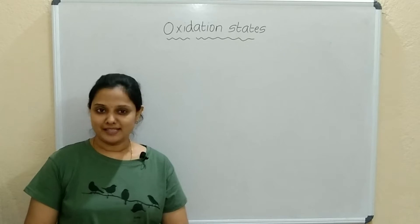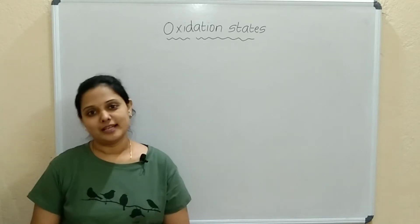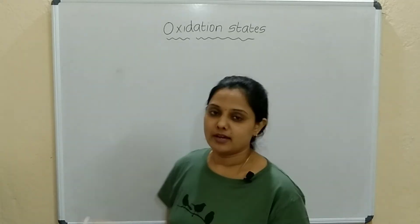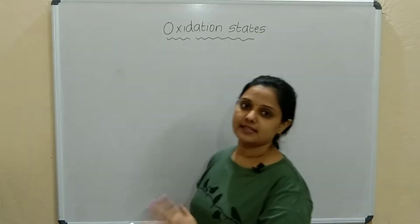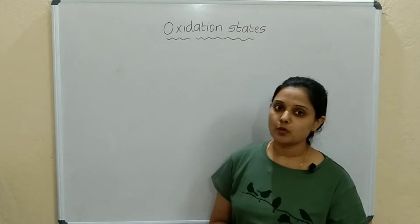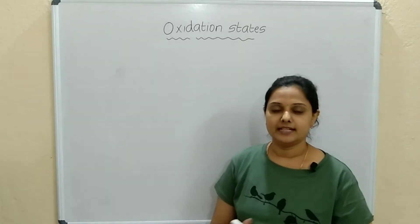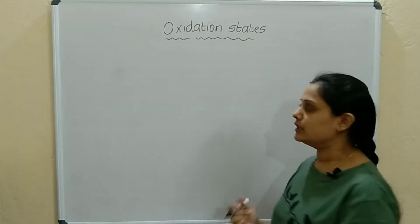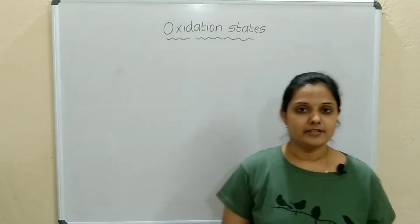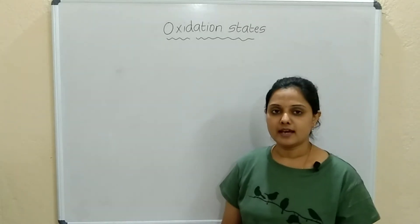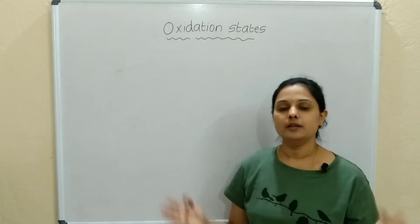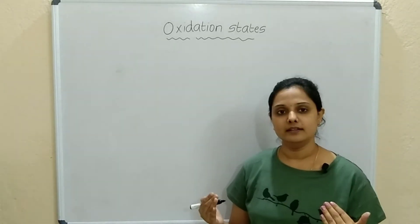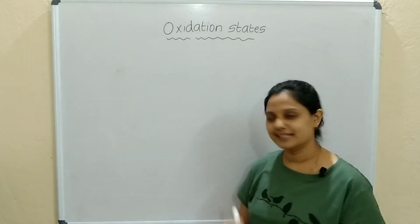Welcome back to our magic tutorials for chemistry. We will discuss today oxidation states of group number 17 elements. Group number 17 elements are Fluorine, Chlorine, Bromine, and Iodine.